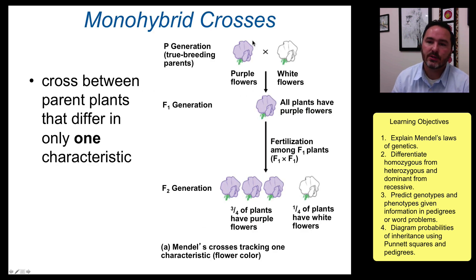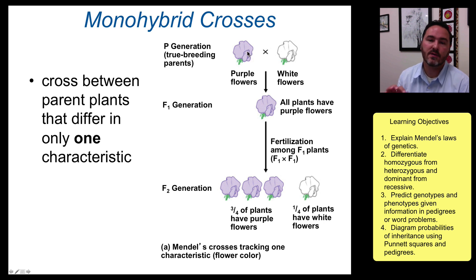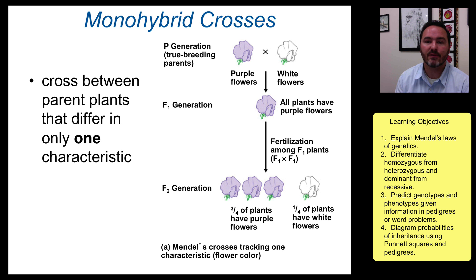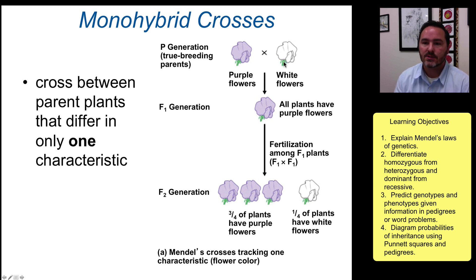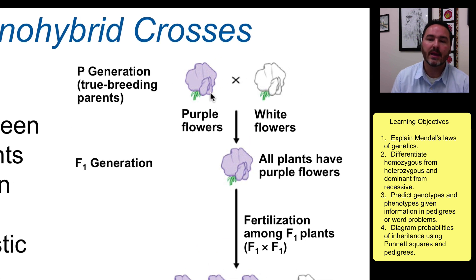He started off doing monohybrid crosses where the only thing that was different between the crosses was the one characteristic he was looking at, and every other characteristic was the same. So if you're going to look at flower colors, then pod shape, roundness of the seeds, and everything — all of that was exactly the same.